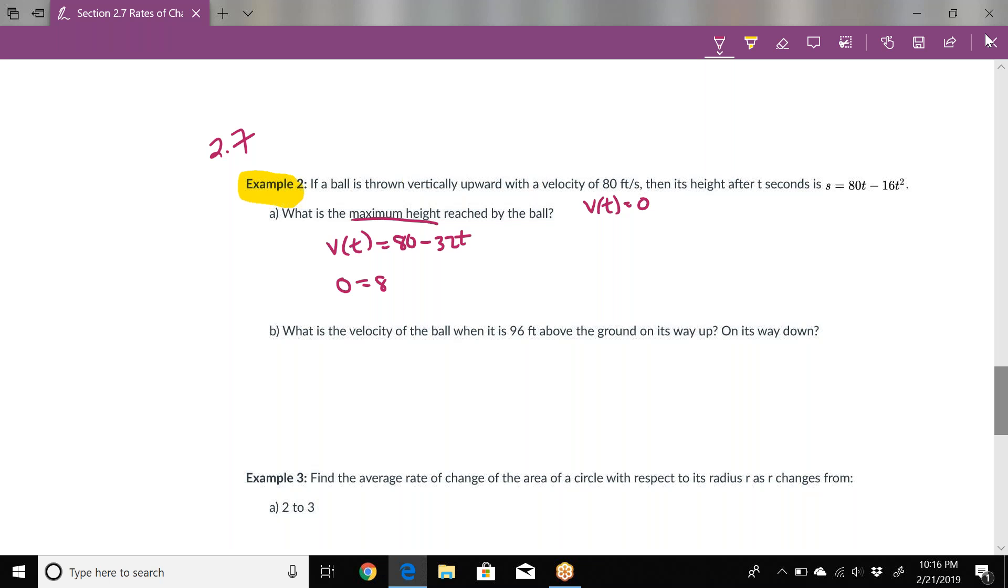We'll set that equal to zero. This will not give us the actual height; this will give us the time it took to reach that height. So 32t = 80, and t = 80/32, which reduces to 5/2 if you divide top and bottom by 16. So 5/2 seconds.